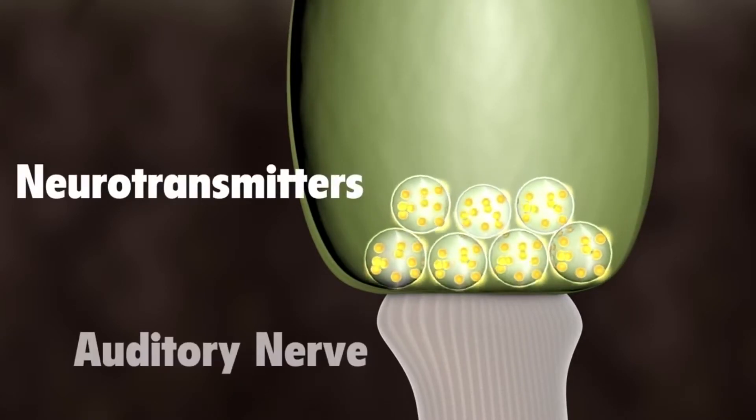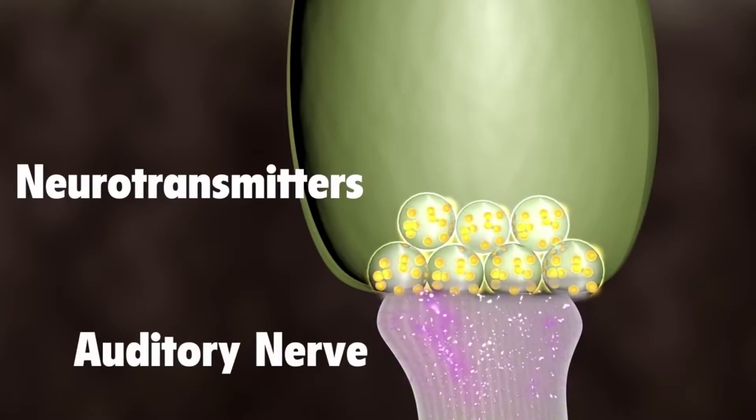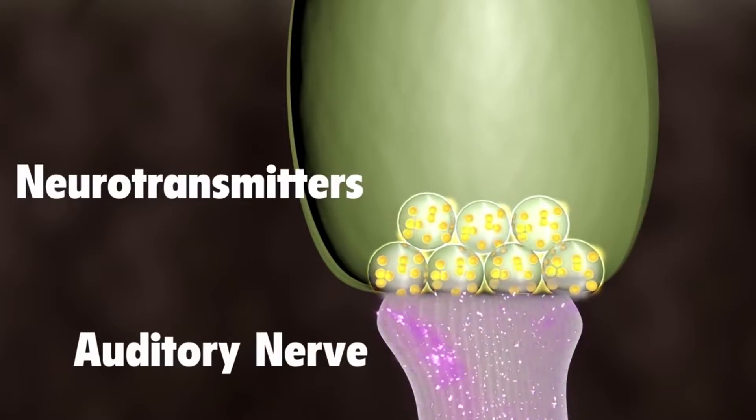The chemicals bind to the auditory nerve cells and create an electrical signal, which travels along the auditory nerve to the brain.